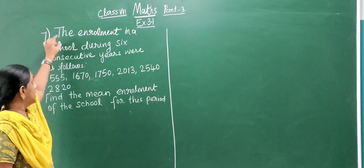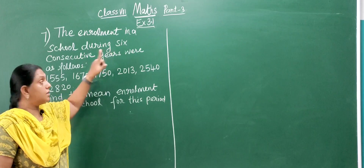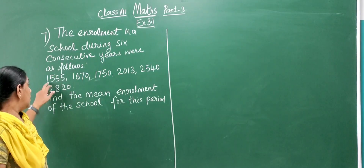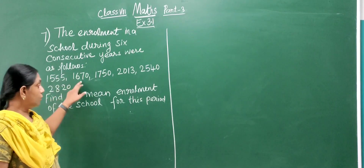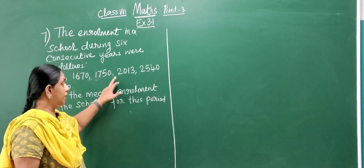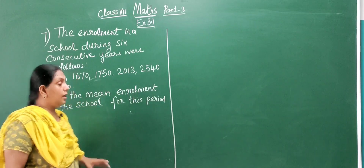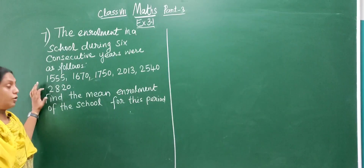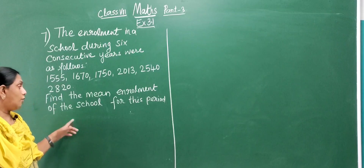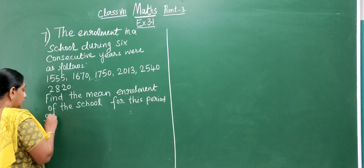Now question number 7. The enrollment in a school during 6 consecutive years was: 1,555; 1,670; 1,750; 2,013; 2,540; and 2,820. Find the mean enrollment of the school for this period.